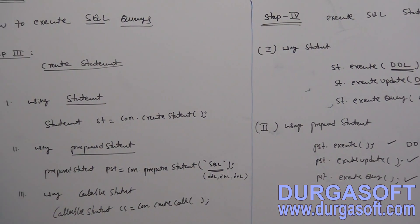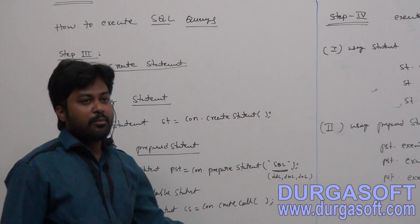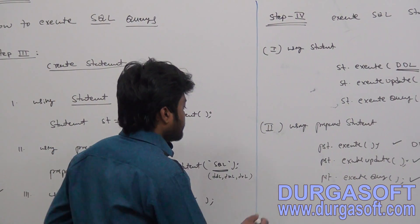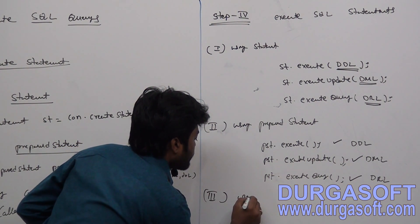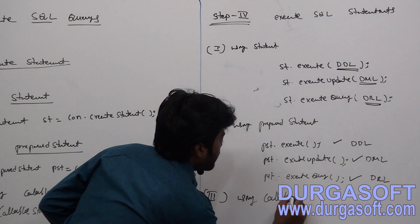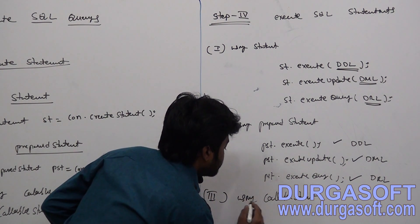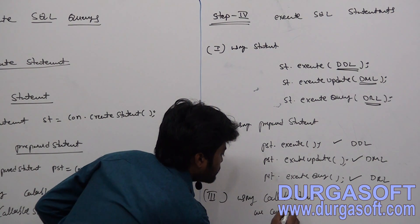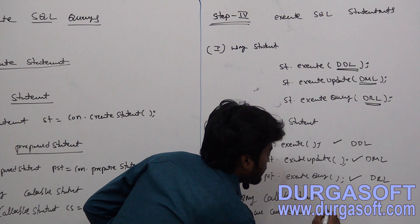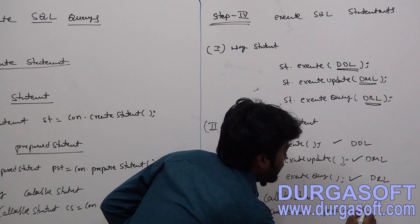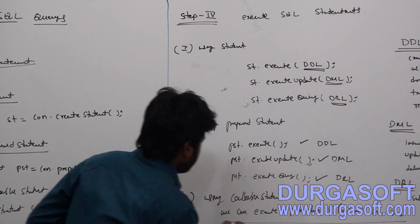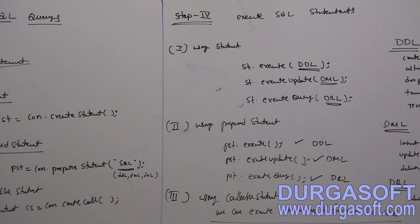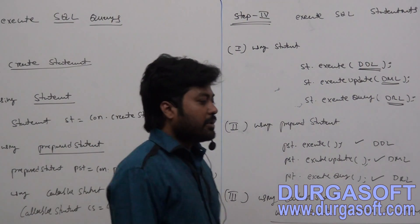And finally, CallableStatement. This CallableStatement is useful for executing procedures or functions. Using CallableStatement, we can execute stored procedures and functions in the database. So just these are the three approaches — one by one I will go through all these steps.